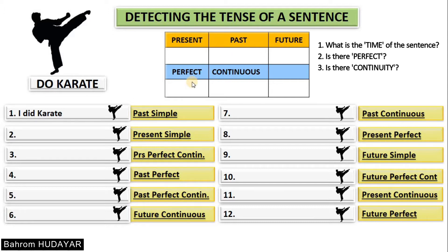The second question is: is there a perfect in the sentence? I told you to study the characteristics of perfect. And the last question was: is there continuity in the sentence? That's all. If you can answer these three questions properly, you will be able to detect the exact tense of your sentence.